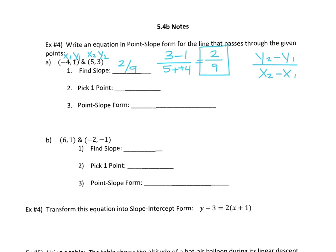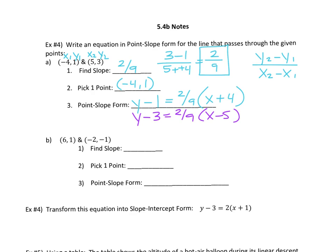Then you pick a point. If you pick (−4, 1), the point-slope equation is y − 1 = (2/9)(x + 4), because x − (−4) becomes x + 4. If you prefer the other point (5, 3), the equation would be y − 3 = (2/9)(x − 5). Either one is correct — they're both right.